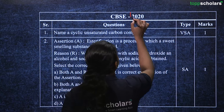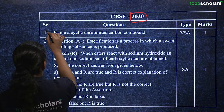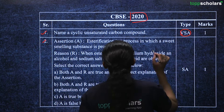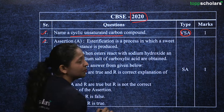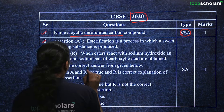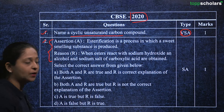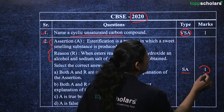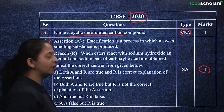For the year 2020, there are two questions. The first is a very short answer question: name a cyclic unsaturated carbon compound — a one mark question. The second is an assertion-reasoning type question where you just select the correct option, like a multiple choice question.